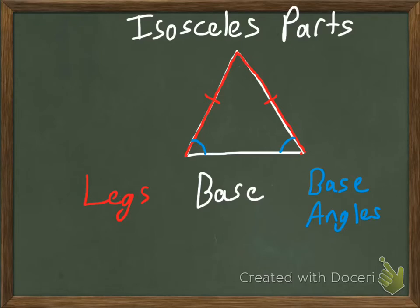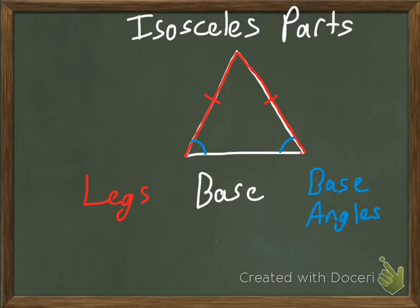There are three basic parts. There are the legs — the legs are the congruent sides of the isosceles triangle, so the two congruent sides are called the legs. The third side is called the base, and it is not congruent to the other two sides. And then in blue here we have the base angles. The base angles are the angles that are opposite the congruent legs.